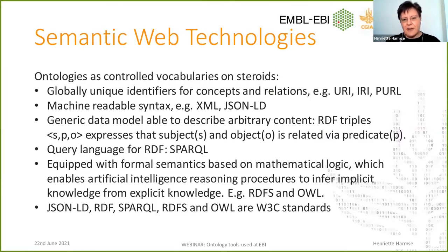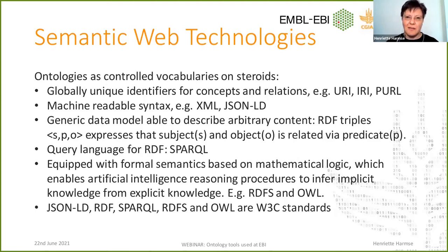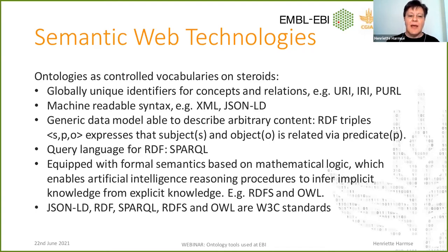The core technology underlying ontologies is semantic web technologies, and that's what really enables the interoperability of our data. The key facility that the semantic web defines and that's used in ontologies is that for every concept, every term, and every relation, you have a unique identifier. That means that when you refer to that unique identifier, you can unambiguously identify what concept and what relationship is referred to. These ontologies are also expressed in machine-readable format — typically XML or JSON-LD.